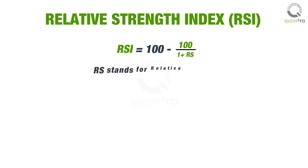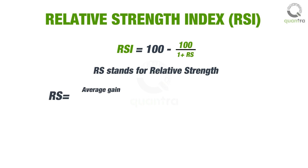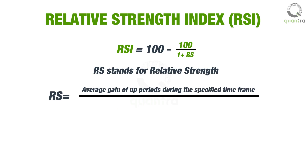Where RS stands for Relative Strength, which is calculated as the average gain of up periods during the specified time frame, divided by the average loss of down periods during the specified time frame.